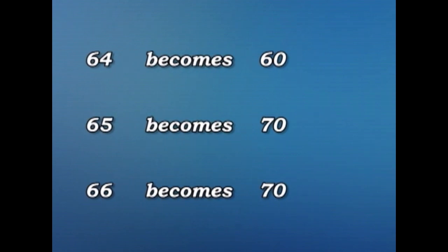Let's have a look at some examples. 64 becomes 60, because 4 is less than half between 60 and 70. 65 becomes 70, because 5 is exactly half of 10. 66 becomes 72, because 6 is more than half of 10.